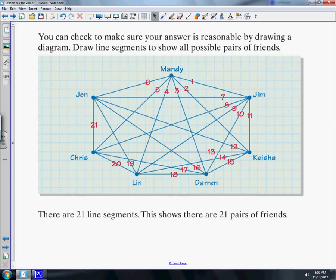What they did is they listed all seven people: Mandy, Jim, Keisha, Darren, Lynn, Chris, and Jen. Then they drew lines to each person. From Mandy to Jim, that's one picture. Then Mandy to Keisha, Mandy to Darren, Mandy to Lynn, Mandy to Chris, Mandy to Jen. So Mandy has a picture with everybody.